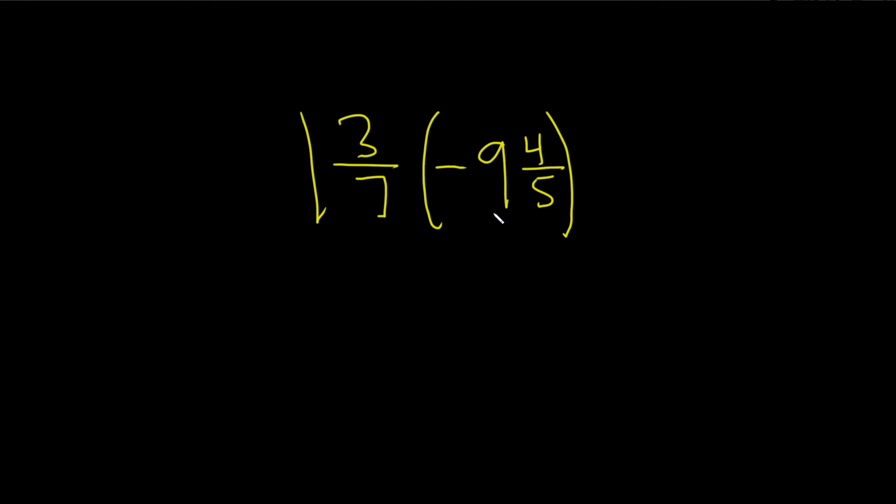Multiply 1 3/7 times negative 9 4/5. The first step is to turn these mixed numbers into improper fractions. Here's how you do it.